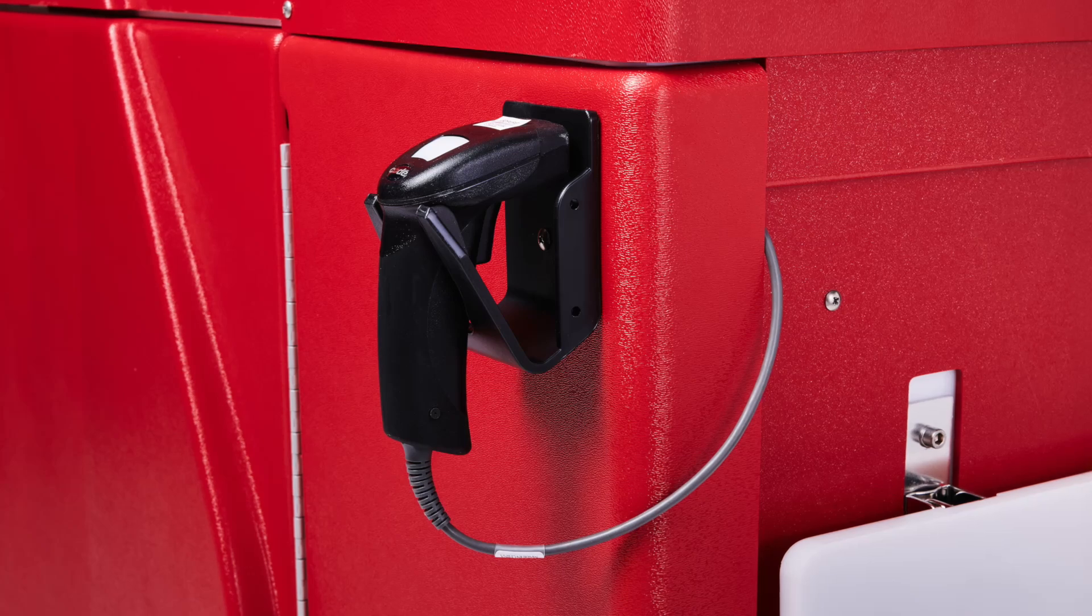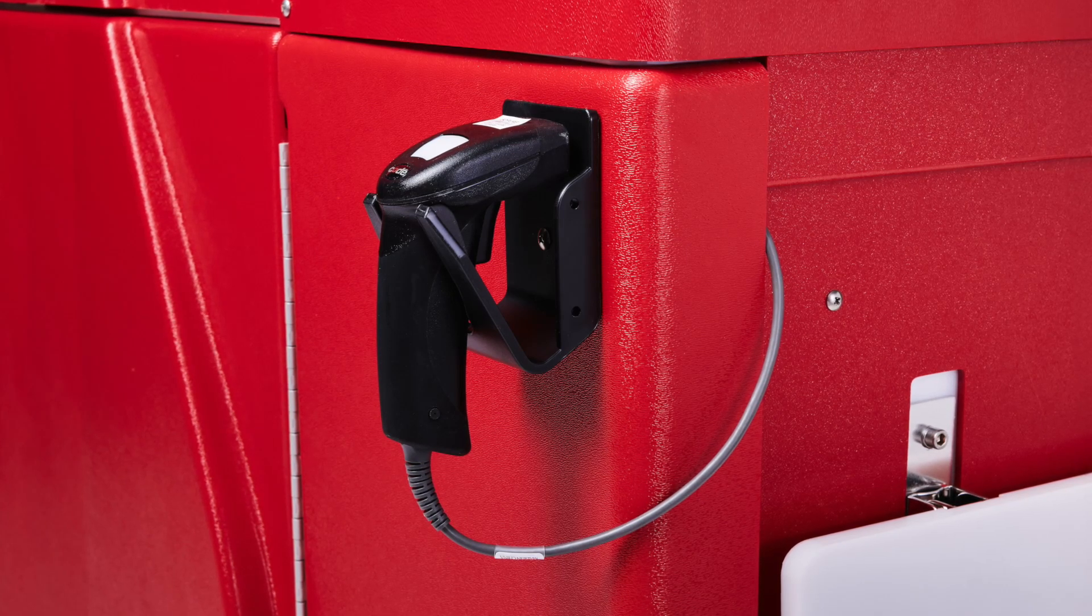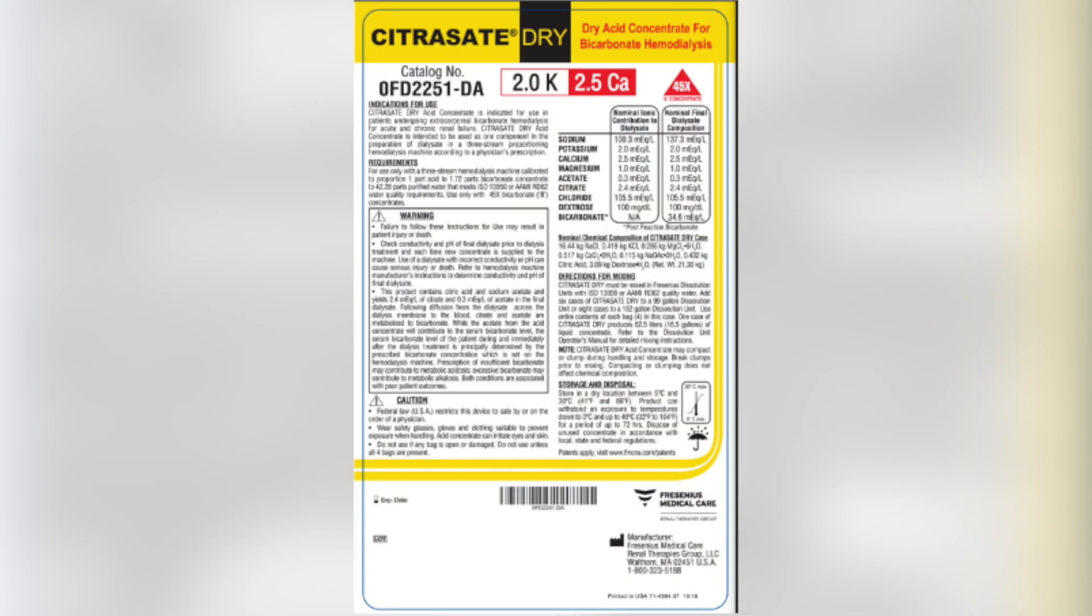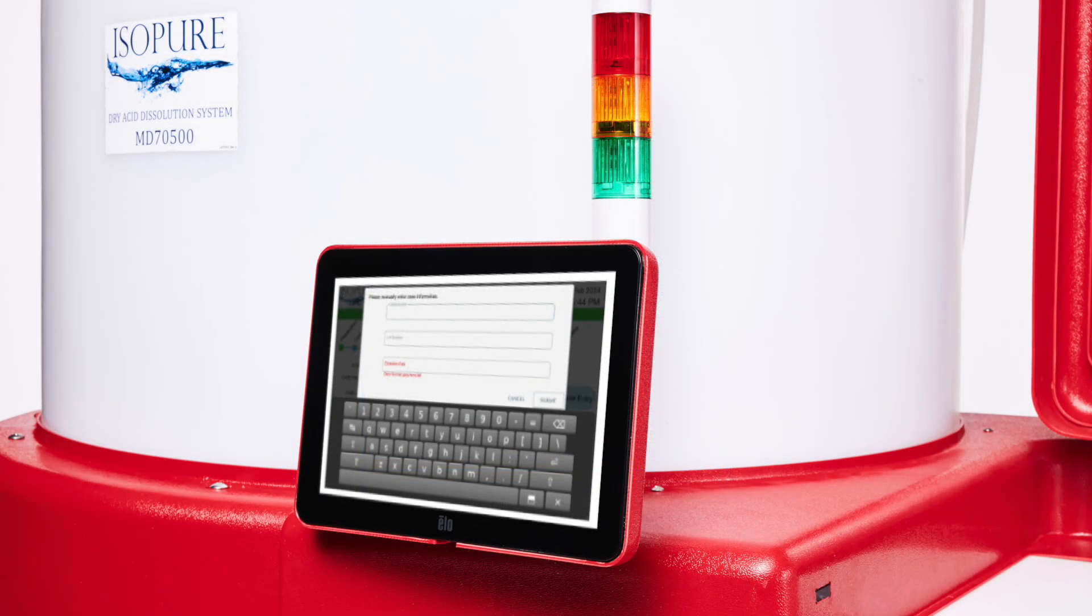If for any reason you were not able to scan your dry acid concentrate, the case barcode, expiration date and lot number are located on the dry acid concentrate label and may be entered manually. Select Manual Case Entry to perform this function.